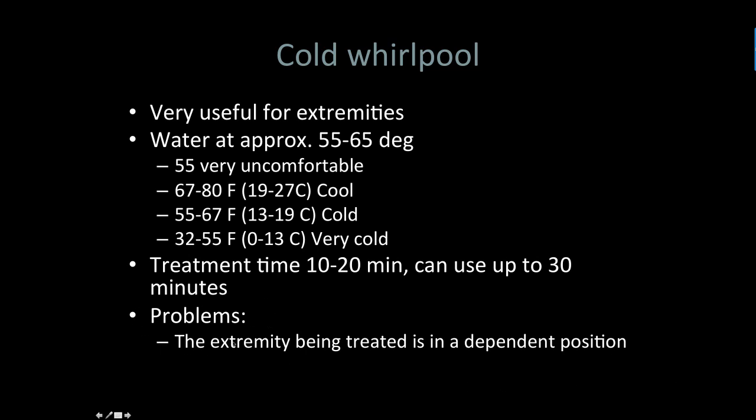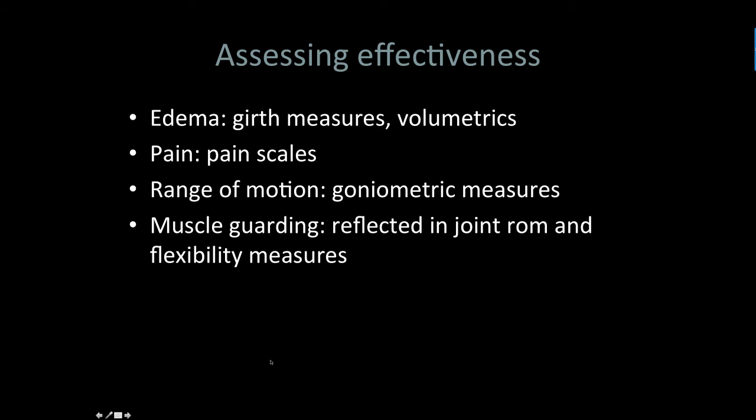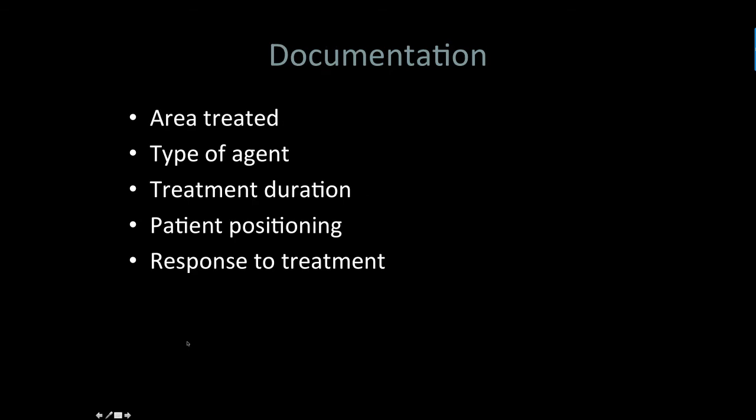When we're done with any of these treatments, we want to assess how effective we were. Different ways to do that: look at a pain scale, check range of motion, look at edema, or use a pressure algometer. Whatever method you use, just make sure you reflect whether there's been a positive or negative treatment effect. Documentation — document well enough so someone else can come along and repeat what you did: where you treated it, what you used, how long you did it, how they were positioned, and how they responded. With that, it's time to head to lab — we'll be experiencing both heat and cold. Make sure you bring your towels and probably some sheets as well. See you in lab!